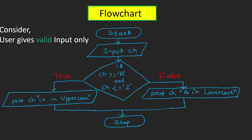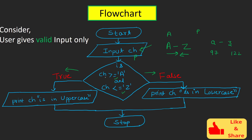In the flowchart I have a variable ch to store the character. I input ch, then check whether ch is between capital A and capital Z, using greater-than-or-equal-to because the user can also enter capital A or capital Z themselves. If this condition is true, we say ch is in uppercase and stop.